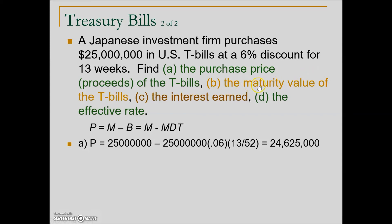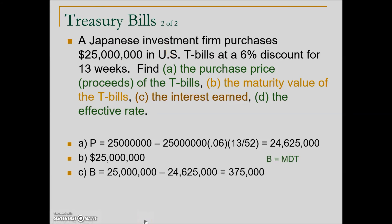The second question asks what is the maturity value of this T-bill — that is the face value. In 13 weeks, after the U.S. government had use of less than $25 million, they will pay back to the Japanese investment firm $25 million. The next question asks what is the interest earned from the Japanese investment. We can find this by taking maturity value minus proceeds, which gives us the bank discount, or we can use the formula. In either case it is $375,000 — from the U.S. standpoint as the borrower, that is their cost of borrowing, and for the Japanese investor as the lender, this is their interest earned.